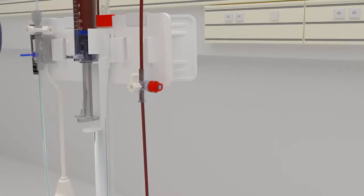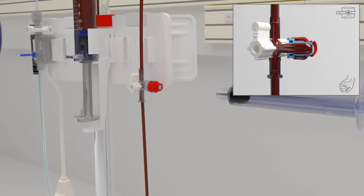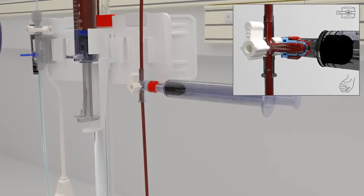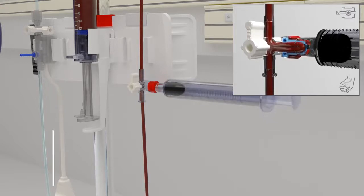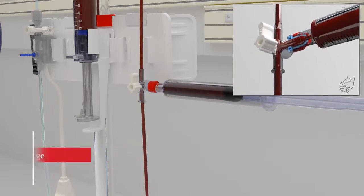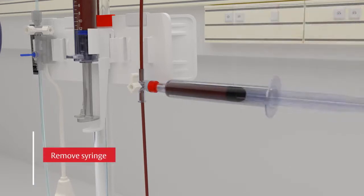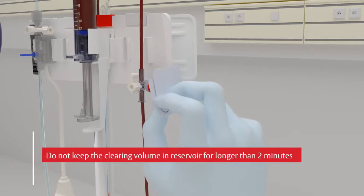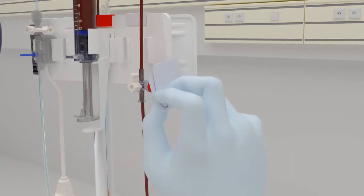Carefully connect a lure lock or lure slip tip syringe to the sample site by slowly pushing it straight into the site using a clockwise rotating motion until it's fully seated. Draw the blood sample, remove syringe from the sampling site rotating counterclockwise. The clearing volume should not remain in the reservoir for longer than two minutes. Once all samples have been drawn, it's now time to re-infuse the clearing volume.